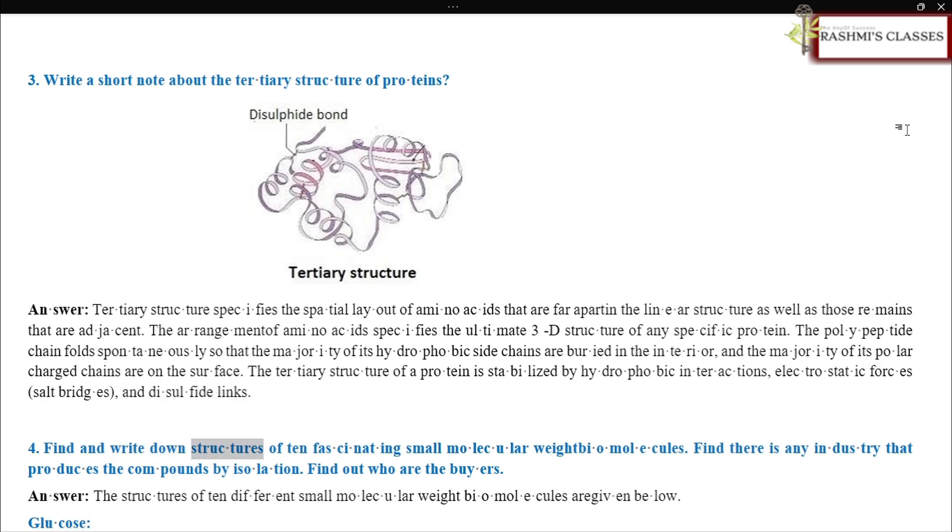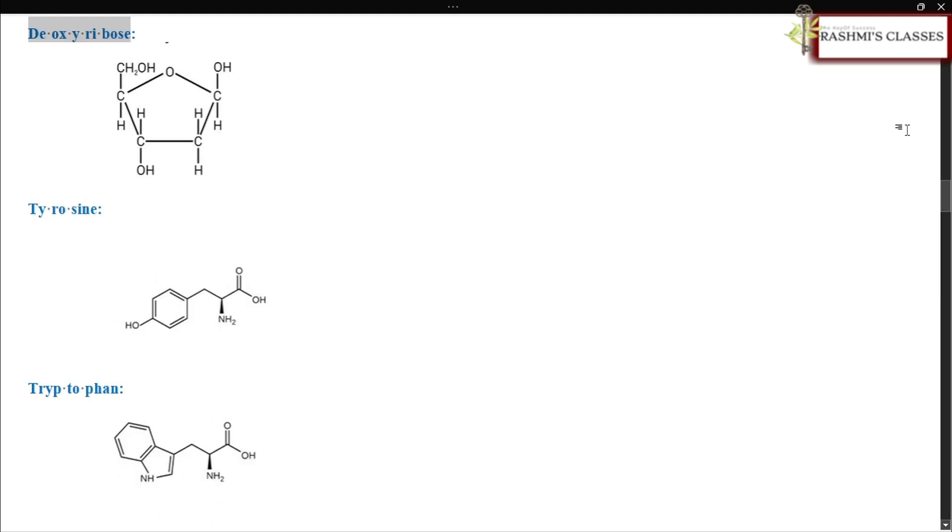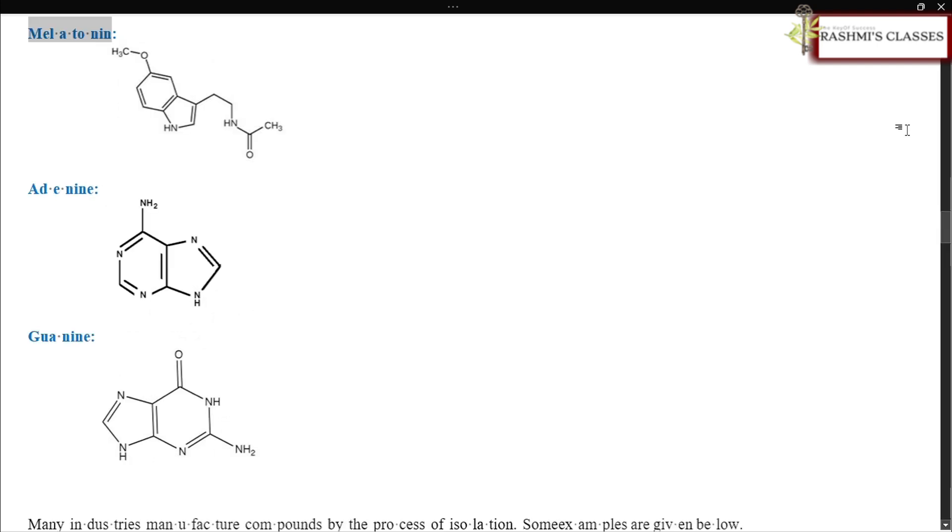Find and write down structures of 10 fascinating small molecular weight biomolecules. Find there is any industry that produces the compounds by isolation. Find out who are the buyers. Glucose, fructose, cholesterol, ribose, deoxyribose, tyrosine, tryptophan, melatonin, adenine, guanine.